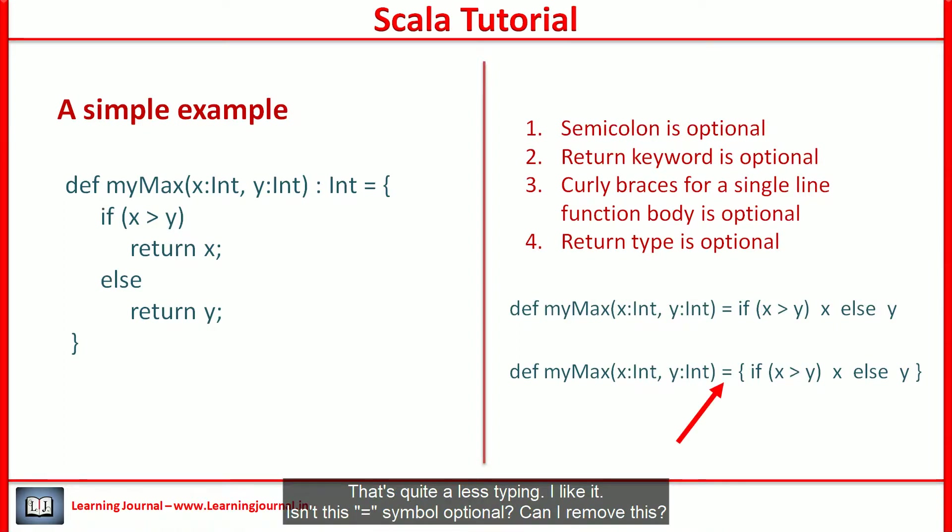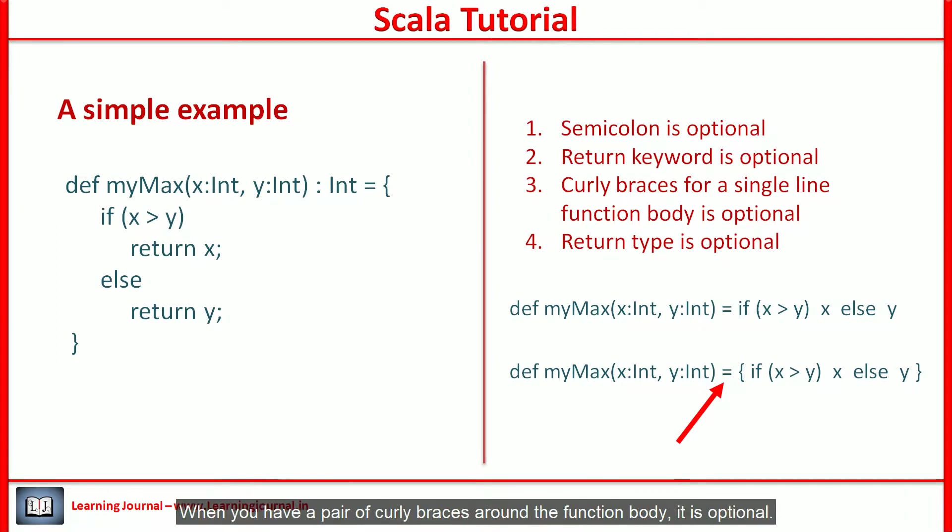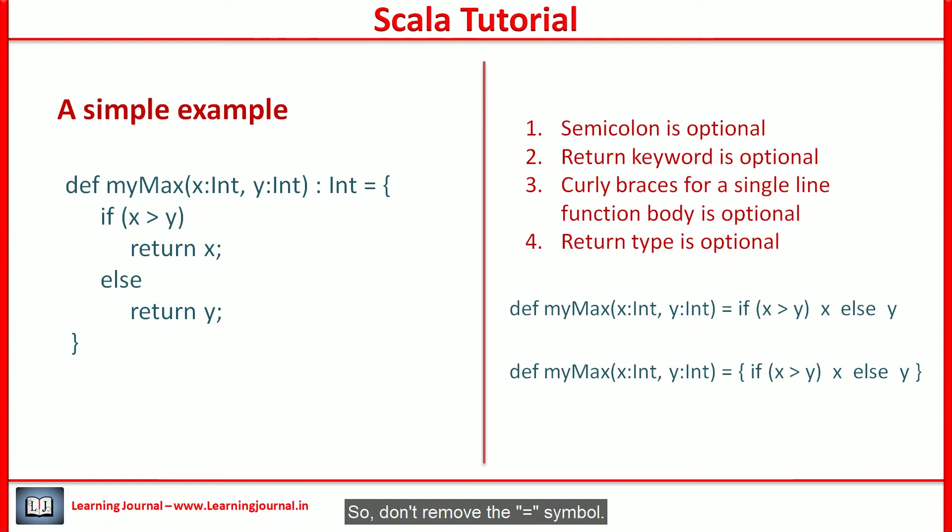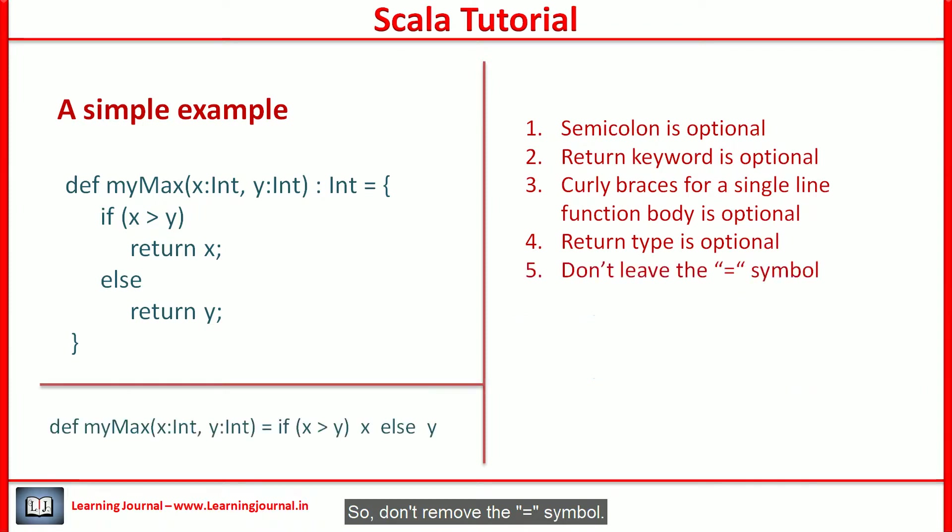Isn't this equal to symbol optional? Can I remove this? When you have a pair of curly braces around the function body, it is optional. But don't do that. I mean never remove the equal to symbol. Why? Is there a problem? Yes. You remove the equal to symbol and the compiler assumes that the function is returning a unit. Your compiler may or may not give you a warning. But it will infer the return type as a unit even if you are returning something else. So, don't remove the equal to symbol.